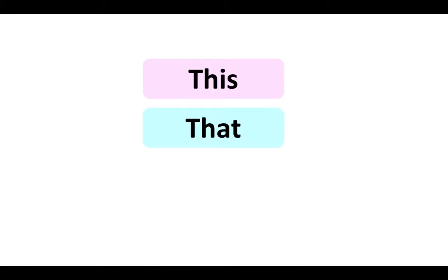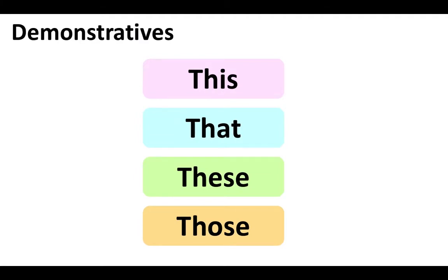This, that, these, those. These are known as demonstratives. Demonstratives are used to point to specific people or things.